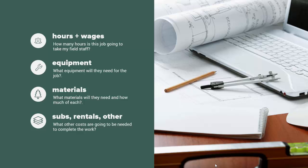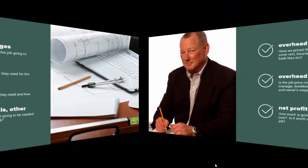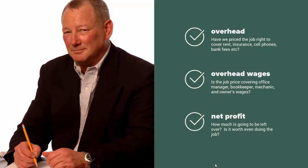Third is the materials list. Every time you build an estimate for a customer, you're going to calculate the cost of the materials you'll need and make sure that's built into the price. Finally, you've got subs, rentals, and other costs — any other extraneous costs required to complete the job. These represent what most people term as job costs or cost of goods sold: the costs that your estimators think about when building a price for a customer job.